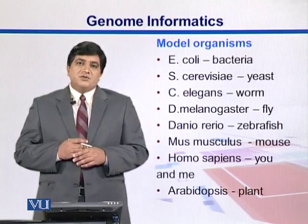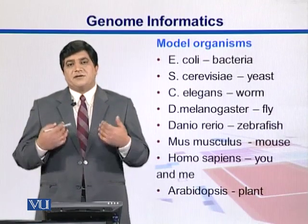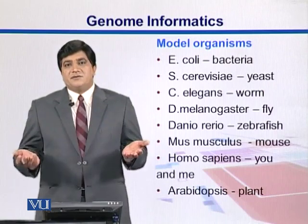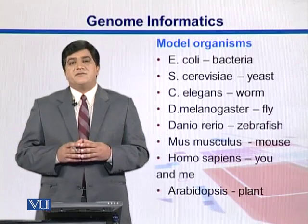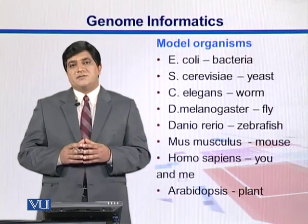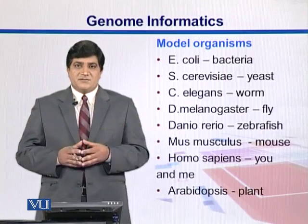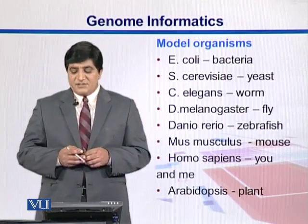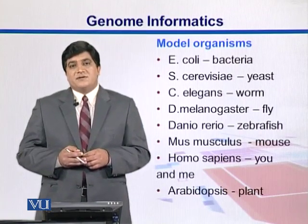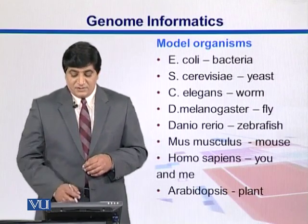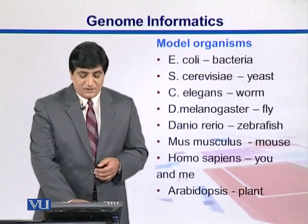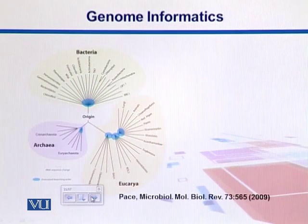Most genome sequencing projects aim at improving human health, correcting diseases, improving crop varieties for more food, or finding drugs against different organisms. It's a good idea to use model organisms to study these processes in labs. Examples include E. coli as a bacterium, yeast, C. elegans, a fly, zebrafish, mouse, Homo sapiens, and Arabidopsis from plants. Here in this diagram we see a universal tree of life made using the structures of the small ribosomal RNA unit, which divides all living organisms into three groups.